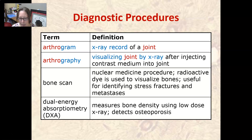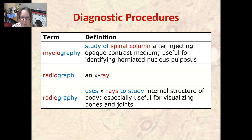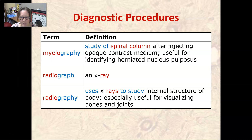Dual energy absorptiometry, or DXA, measures bone density using low-dose x-ray and it detects osteoporosis. Myelography is a study of the spinal column after injecting opaque contrast medium. It is useful for identifying a herniated nucleus pulposus — a slipped disc or bulging disc.